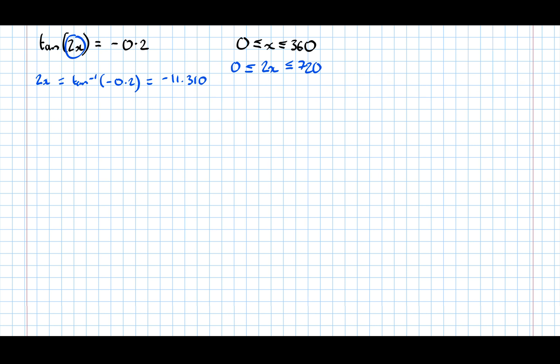It's really important to point out we don't divide by 2 at this point. We want all of the angles that have a tan of minus 0.2. If we divide by 2 here, we change the angle and the tan of it will no longer be minus 0.2. So what we're going to do now is draw a sketch of the graph before we divide by 2, and find all the solutions that have a tan of minus 0.2.